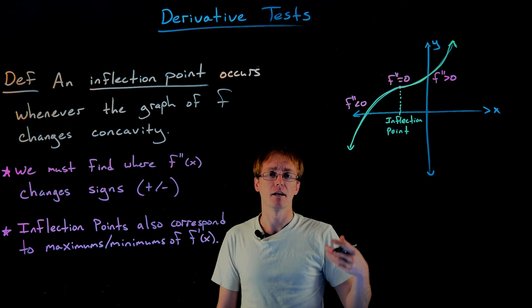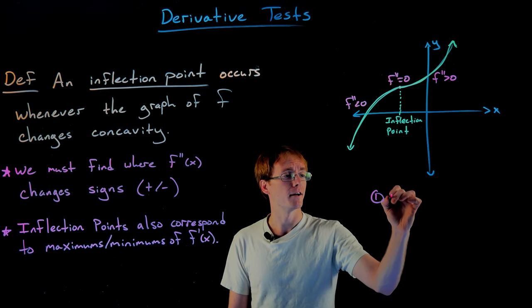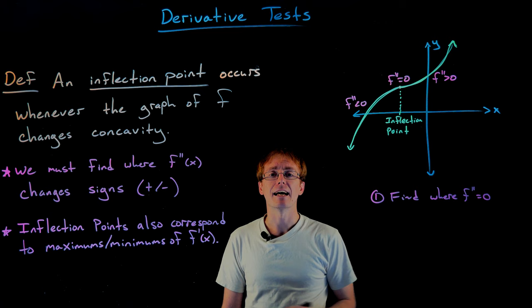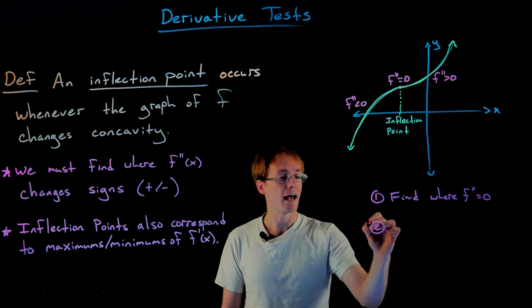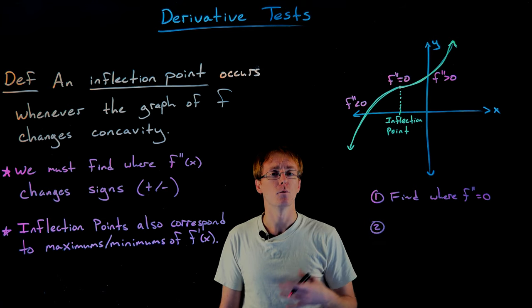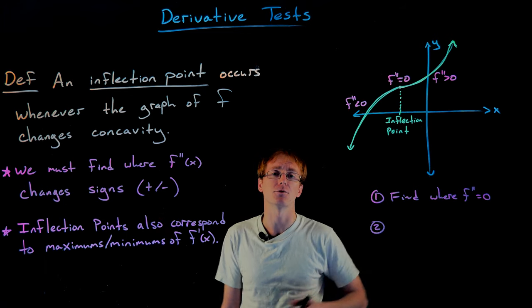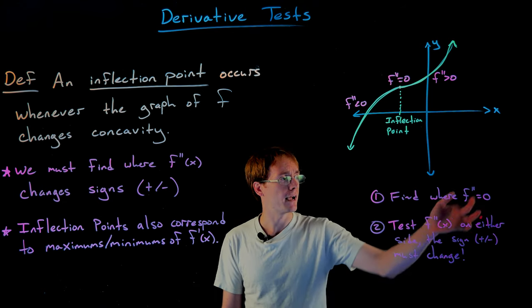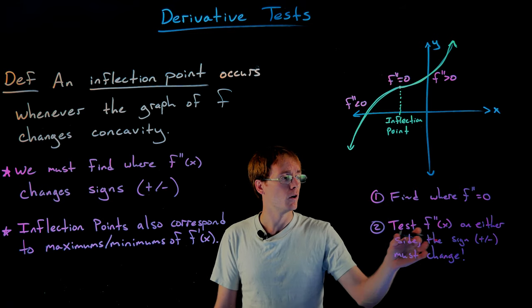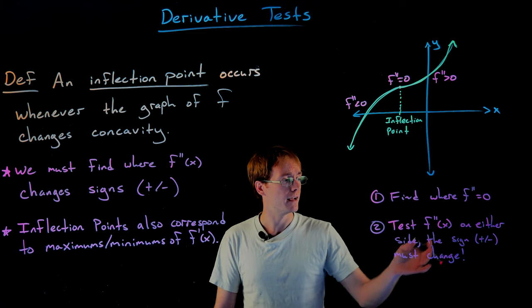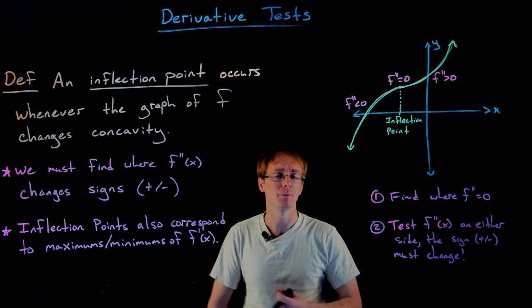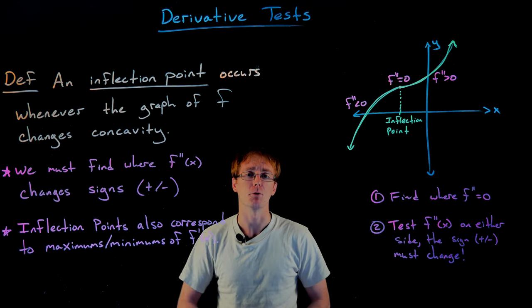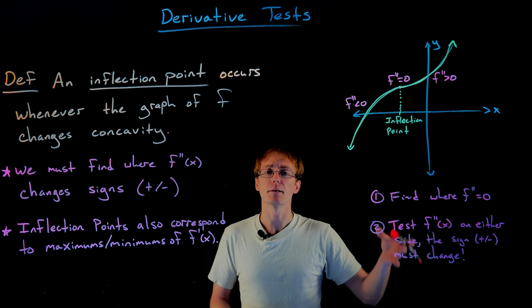Finding an inflection point is a multi-step process. First, we find where the second derivative is equal to zero — finding the x-values that make the second derivative equal to zero. Then we have to check that our concavity actually changes, meaning the second derivative has a sign change as we pass through that zero: does it switch from positive to negative or from negative to positive? We test the second derivative on either side of that zero, and as long as we have a sign change, we guarantee our concavity changes and we have an inflection point.